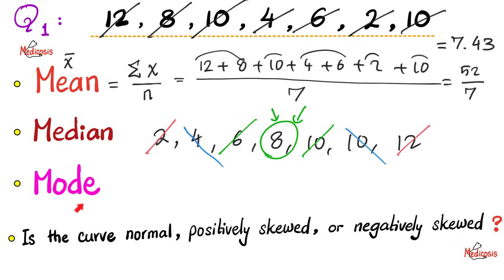Third, what's the mode? From the French à la mode. It's the most frequent. It's the most trendy. It's the most fashionable value. As you see here, the number 10 was repeated twice. Every other number was repeated only once, making 10 à la mode.